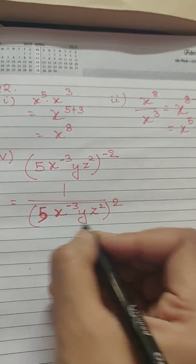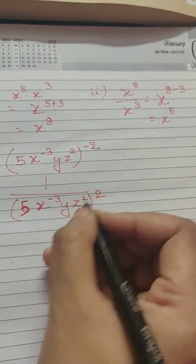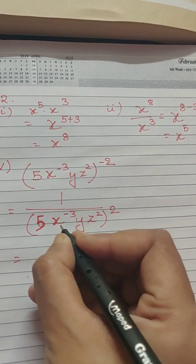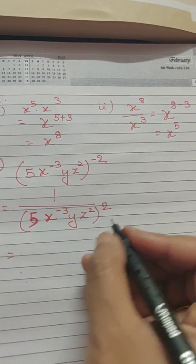Now in this case, when there are more than one variables and one exponent, each of the variables and the number as well will be raised to the power of 2.